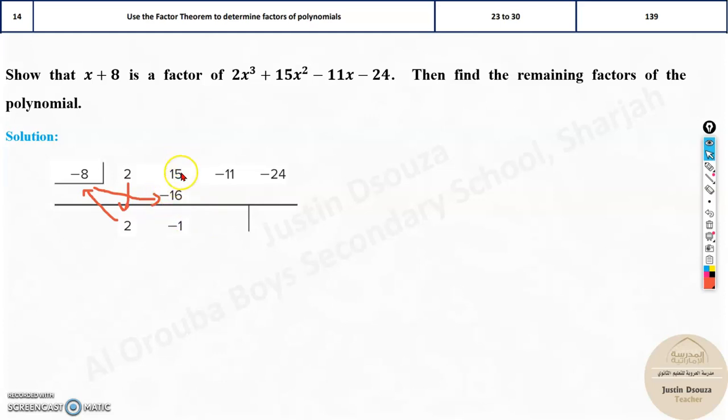Now you need to add. Just add them up. So what happens? Minus 16 plus 15 is minus 1. Now same procedure repeats. You need to keep on doing this. This multiplied by this, write it over here, add it up. And same thing goes again.